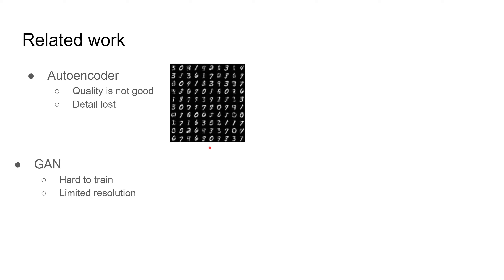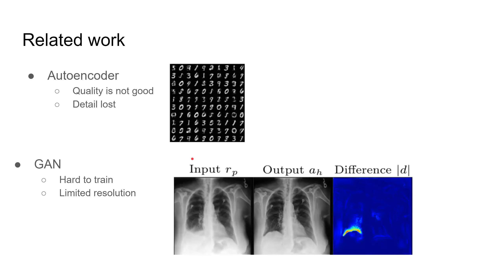Another advantage diffusion has over GAN is that GAN has a pretty limited resolution, while diffusion has already shown it is capable of generating really large, high-resolution images with pretty good fidelity and quality. Here is the result produced by the GAN paper — the inpainting part is really doing a pretty good job, although we can still see some other parts of the body, the anomaly region is highlighted pretty well.